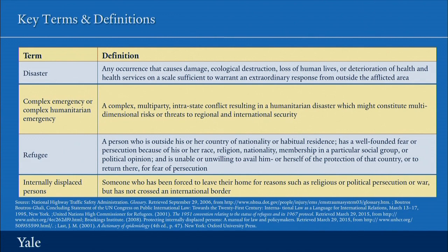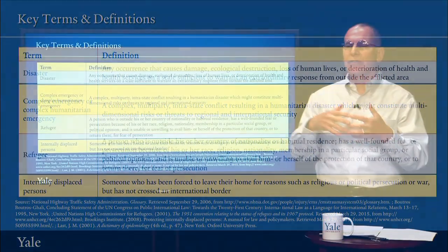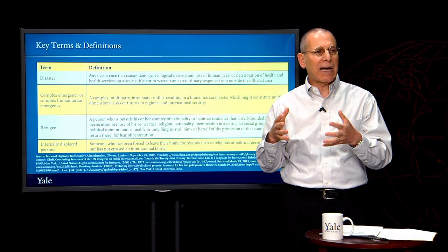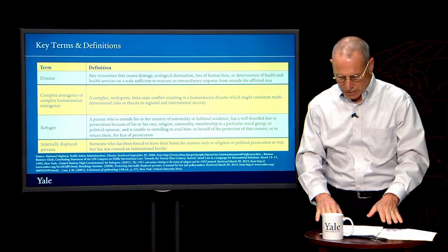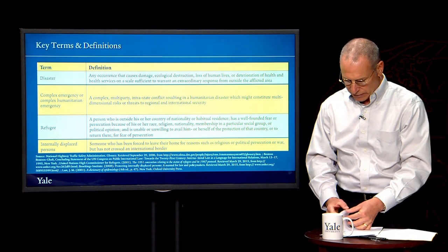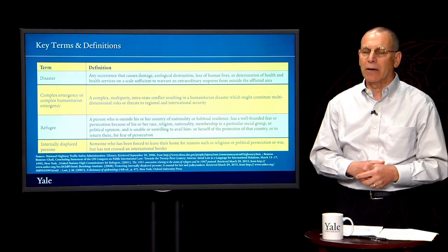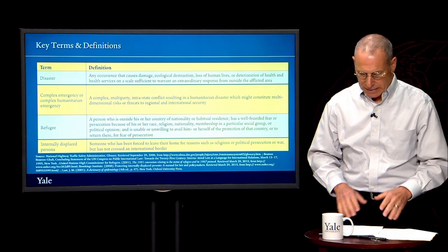By contrast, an internally displaced person is someone who has been forced to leave their home for reasons such as religious or political persecution or war, but they have not crossed an international boundary. They don't have the same status internationally or legally as refugees do. This is very important to note when thinking about complex humanitarian emergencies especially.